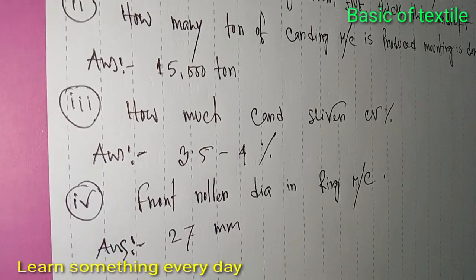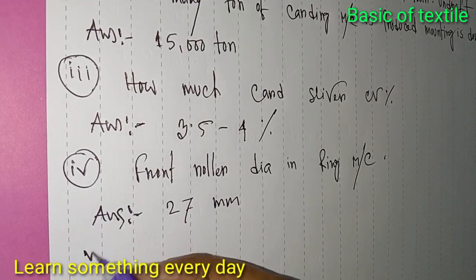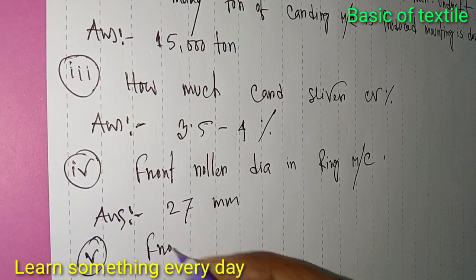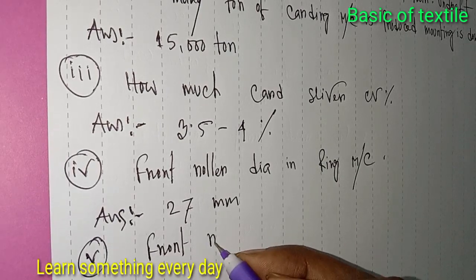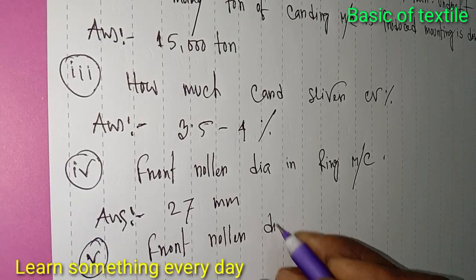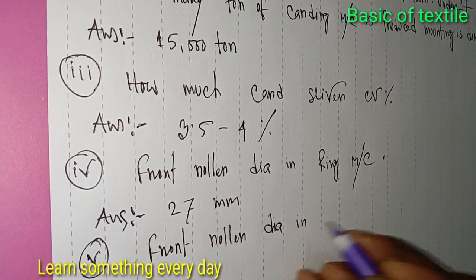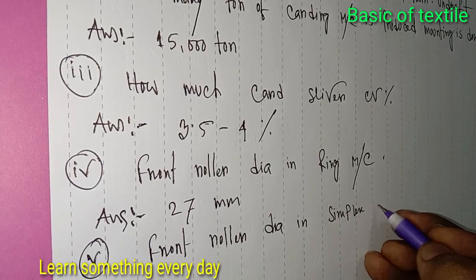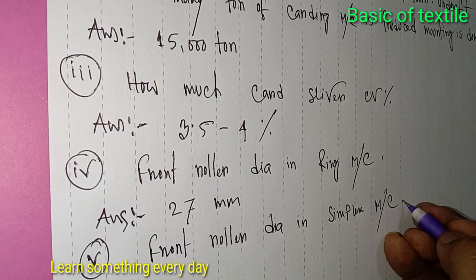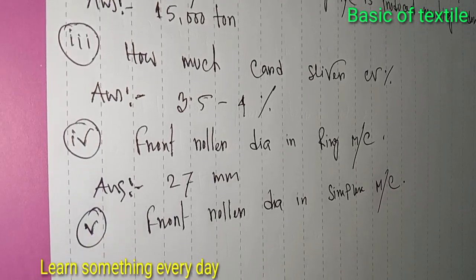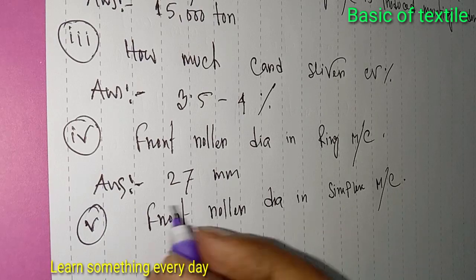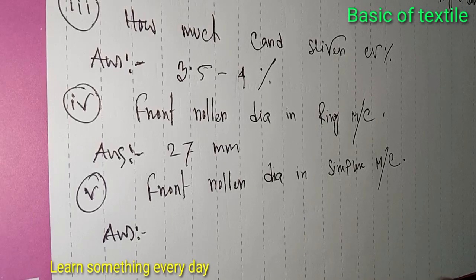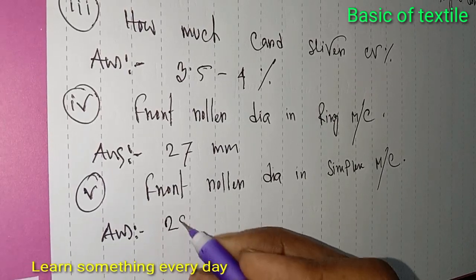Number five: Front roller diameter in simplex machine. Answer: 28 millimeter.